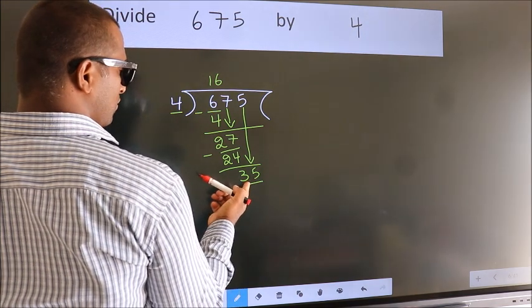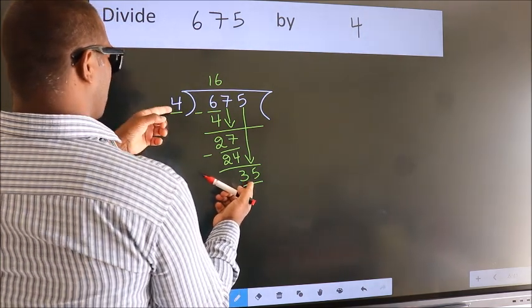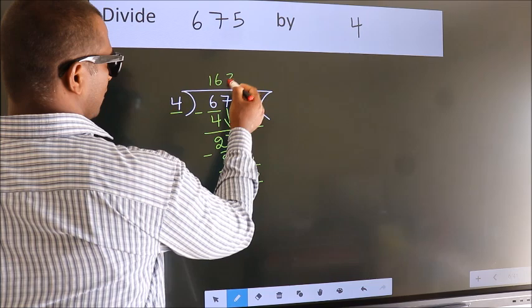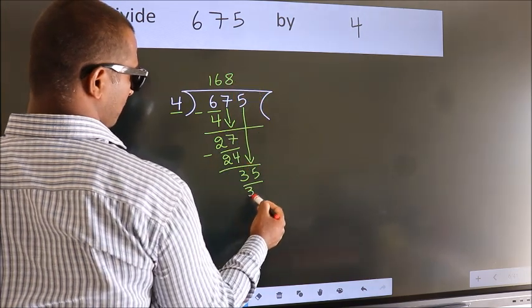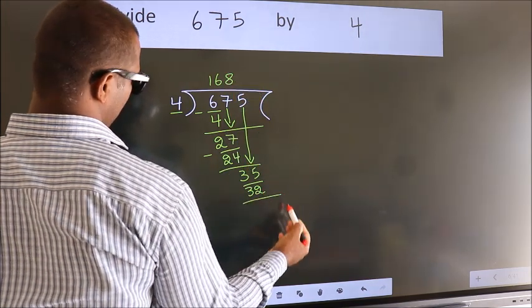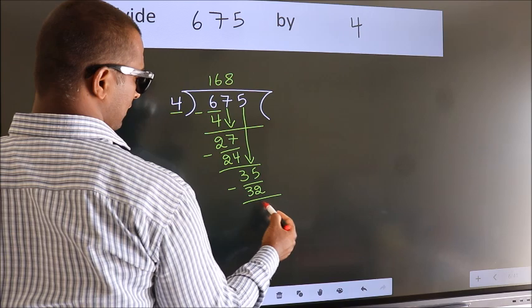A number close to 35 in the 4 times table is 4 times 8, which equals 32. Now we subtract and get 3.